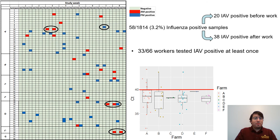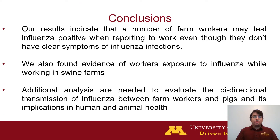As you can see in this graphic, there is not a clear pattern, but we do see some interesting findings. Individual blue squares indicate a person who entered the farm negative but came out positive, suggesting probable exposure to influenza circulating in the farm. Our results indicate that a number of farm workers may test influenza-positive when reporting to work, and we found evidence of workers' exposure to influenza while working on the farms. Additional analysis will be needed to evaluate the directionality of transmission between farm workers and pigs, and what the implications are for human and animal health.